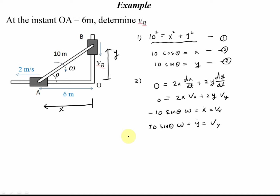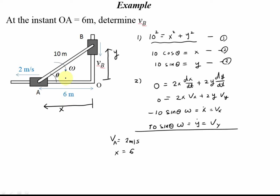We know the velocity of A. The velocity at A is given as 2 meters per second. We also know X equals 6. We can get theta as well: when X is 6 and the hypotenuse is 10, then 10 cosine theta equals 6, so cosine theta equals 6 over 10. Now I want to find Vy.